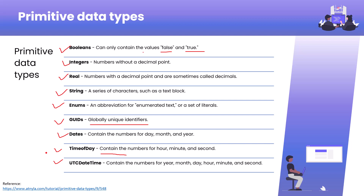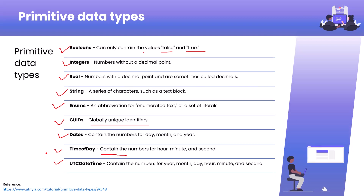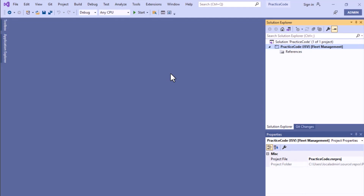In total we have nine primitive data types: boolean, integer, real, string, enum, GUID, date, time, and UTC DateTime. We will now show you practical examples of how to declare and initialize each of these in code.